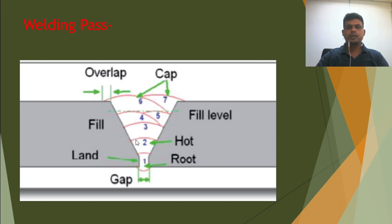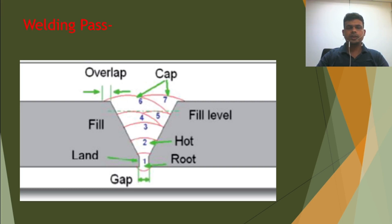The second pass is called the hot pass, which someone may also call the fill pass. After the second pass there is the third, fourth, fifth — all filling passes up to before the capping pass. The last two passes are the capping. The bevel is filled with filling passes, and then the capping pass goes beyond the bevel, overlapping onto the parent metal — this is called the overlap. I hope you understand the root pass, hot pass, filling passes, and capping.